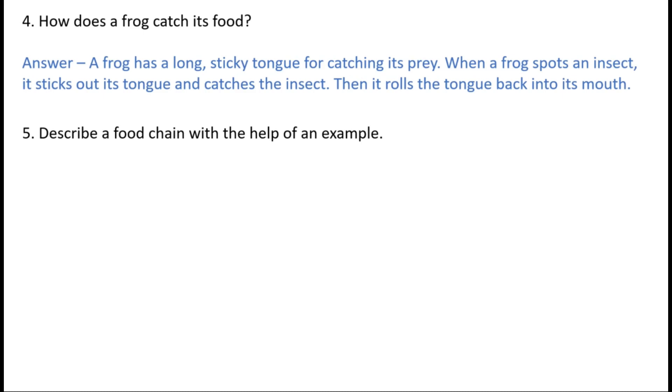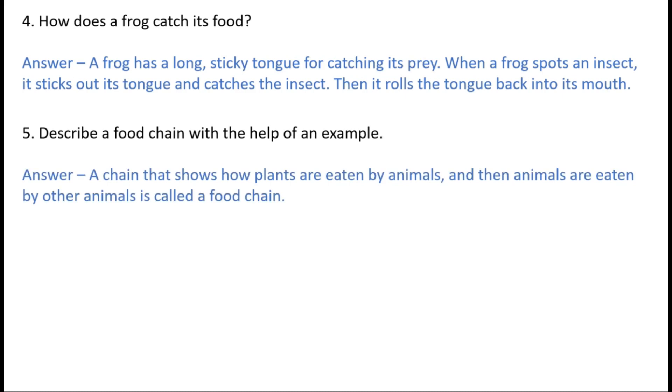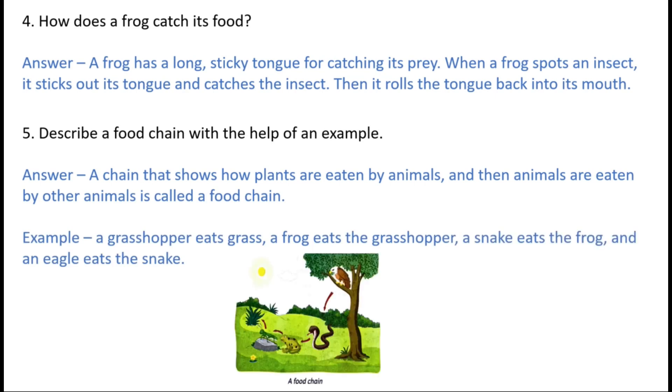Describe a food chain with the help of an example. A chain that shows how plants are eaten by animals and then animals are eaten by other animals is called a food chain. Example: a grasshopper eats grass, a frog eats a grasshopper, a snake eats the frog, and an eagle eats the snake. As you can see in the picture.